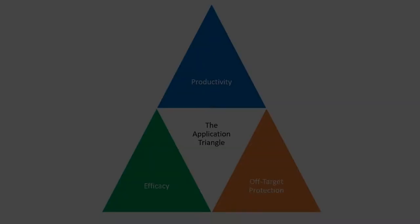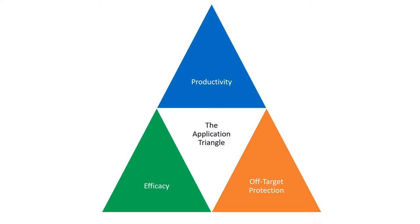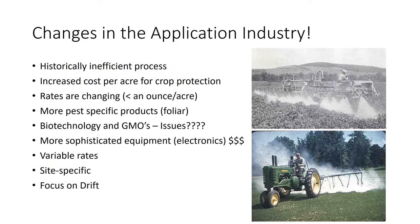Anytime I start talking about spray equipment or any type of liquid application equipment, I like to start with the application triangle. It's a larger triangle composed of three smaller triangles where two of the smaller triangles support the third. It's an analogy for the fact that our efficacy and our off-target protection have to be in place before we can look at productivity. Efficacy means how good a job we are at killing the target — weed control for example — and off-target protection means getting our droplets exactly where we want them. Once we have those two things, then we can talk about productivity: getting faster, wider, larger equipment to cover more acres in a shorter time.